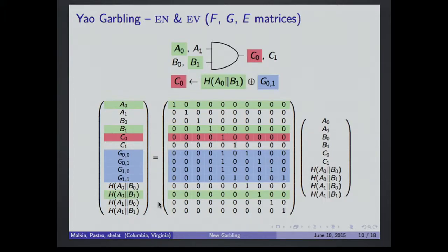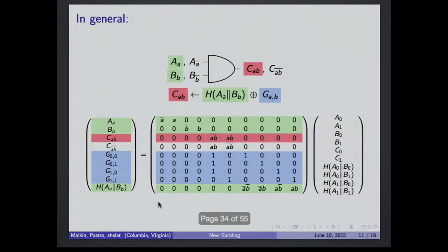This is for a specific input. For general input, so for any A and B that are the inputs to the wires, I can describe the same thing. I just replace 1s and 0s with symbolic As and Bs. So if A is 0, here you get a 1, so you get a 0, and so on. It's a very convenient way to express all these four matrices at once, because essentially we can argue about some linear properties of this matrix.